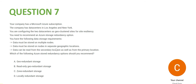The requirement says nodes should be in separate geographic locations — geo locations. Geographic locations means different regions, not different availability zones or data centers. Zone redundancy is within one region, and local is local to Los Angeles or New York. So those two will not work, leaving us with A and B.